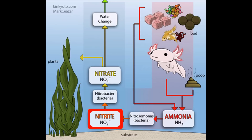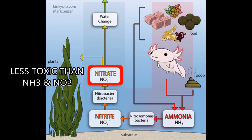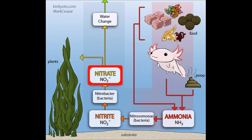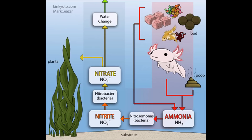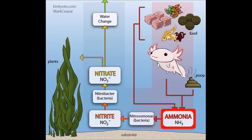Unfortunately, nitrite is also highly toxic, but another type of bacteria called Nitrobacter can metabolize this into nitrate, which is less toxic than both ammonia and nitrite. What's nice about nitrates is that they can be used by plants or removed with water changes. Aquatic life can handle small amounts of nitrate in the water column, so it's important that you have a large enough bacterial colony to quickly convert ammonia to nitrite to nitrate.